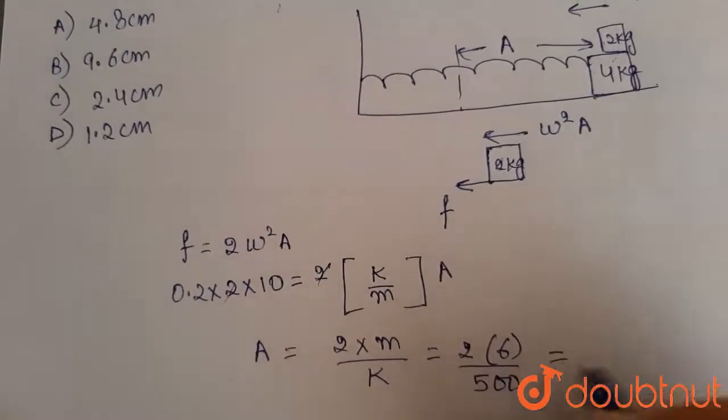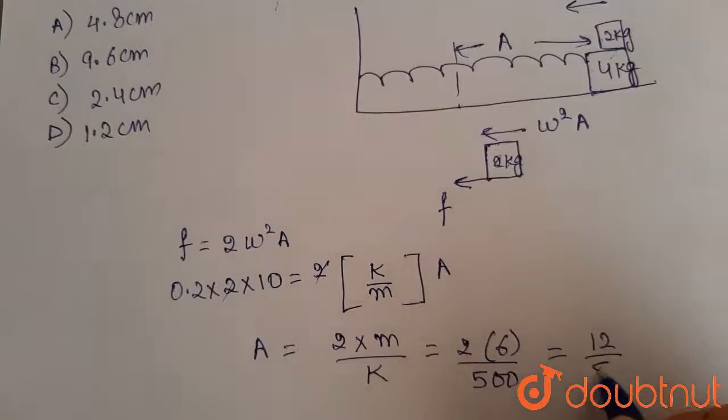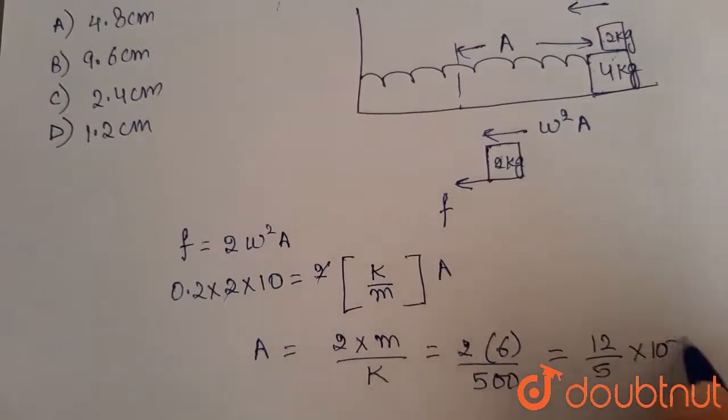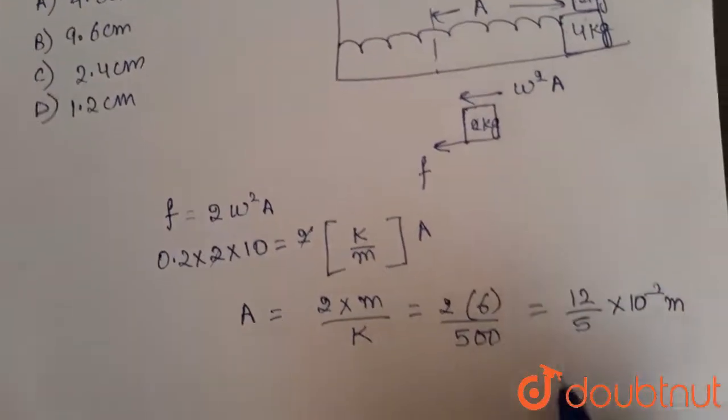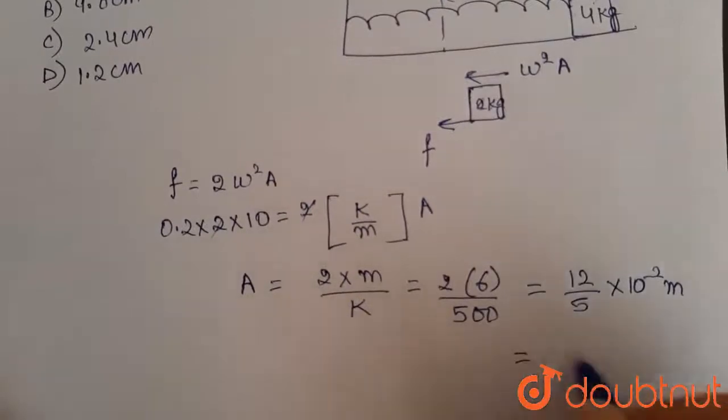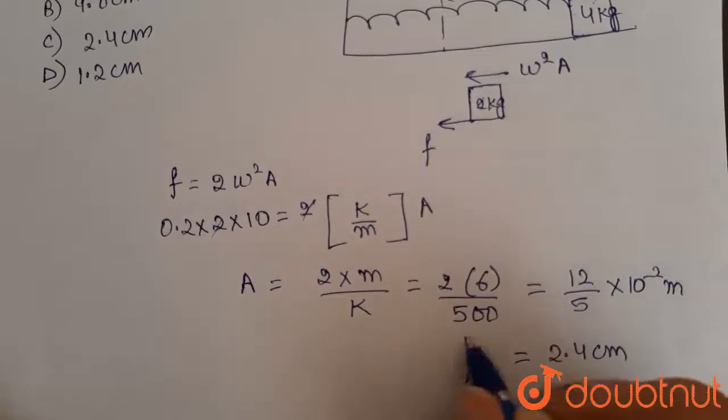So this will give you 12 by 500 into 10 to the power minus 2 meters, which implies the amplitude is equal to 2.4 centimeters. This is the amplitude of the system.